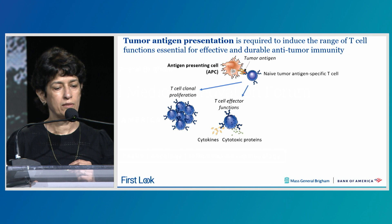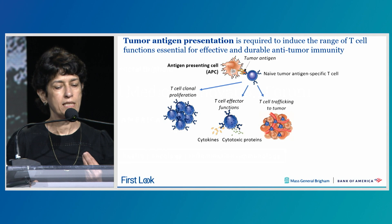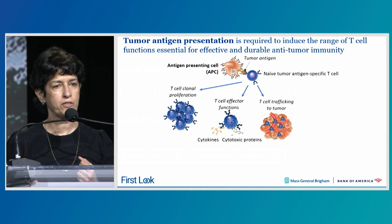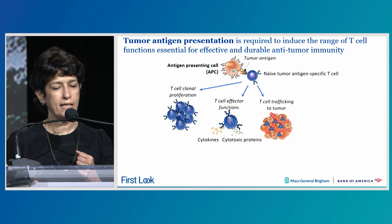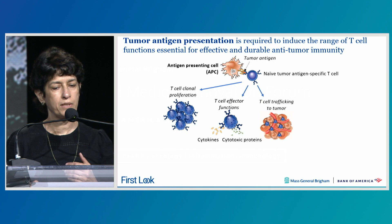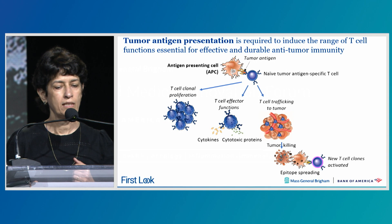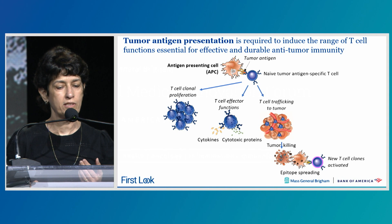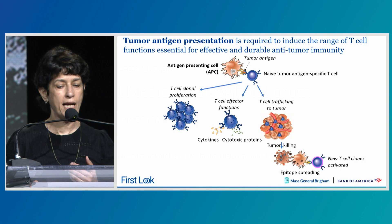The clonally expanded, armed T-cells then traffic to the tumor—a process also dependent on antigen-presenting cells, which generate chemoattractants that help T-cell infiltration. CD8 T-cells then kill tumors, leading to the release of additional antigens taken up by intratumoral APCs to activate additional T-cell clones, broadening the immune response.